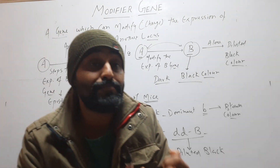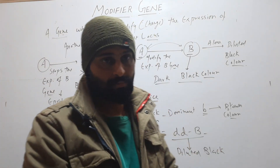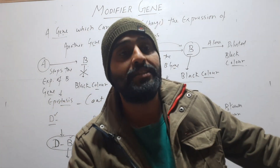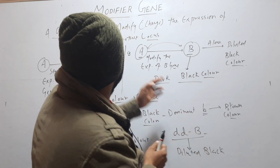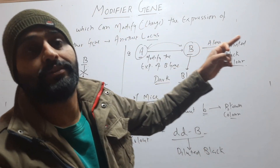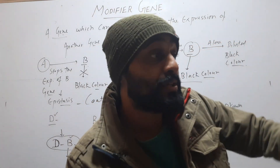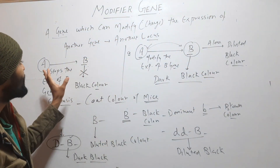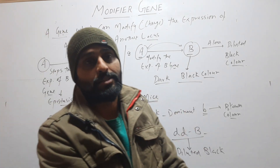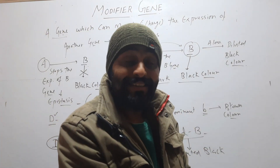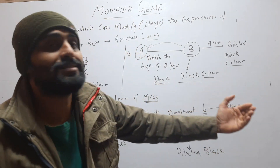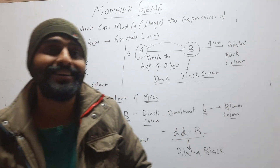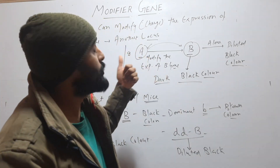So what this D gene did is simply enhance the intensity of color — it enhances the expression of the B gene. Such a gene which changes the expression of another gene that is present on another locus is called a modifier gene. This is how it is different from epistasis: epistasis simply stops the expression of another gene, whereas a modifier gene enhances or changes the expression of another gene.